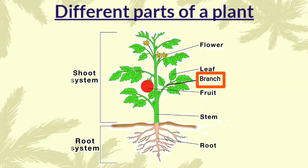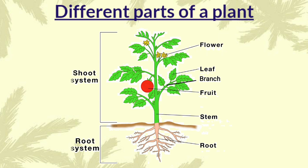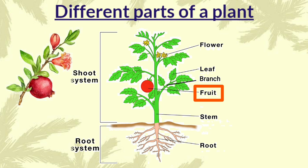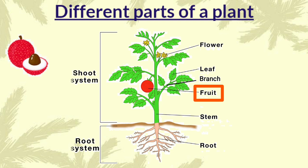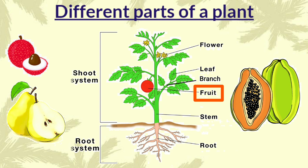Branch is a part that grows from the stem. It helps to hold the leaves, flowers and fruits. Flower is the most beautiful part of a plant. The flower produces seeds or fruits. Fruit is the most tasty part of a plant. Many flowers grow into yummy fruits which we eat. It has seeds inside. Some fruits have one seed, some have two, and some fruits have many seeds. Some fruits grow into new plants.